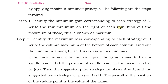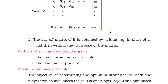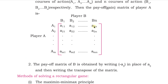The steps involved are: first, identify the minimum gain corresponding to each strategy of player A, write the row minimum on the right of each row, then find out the maximum of these — this is called the maximin. Let me show it with the payoff matrix of player A.